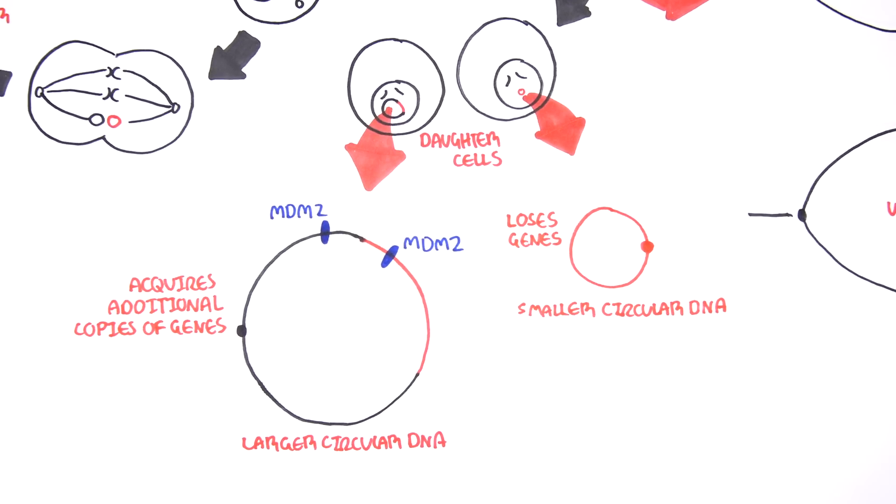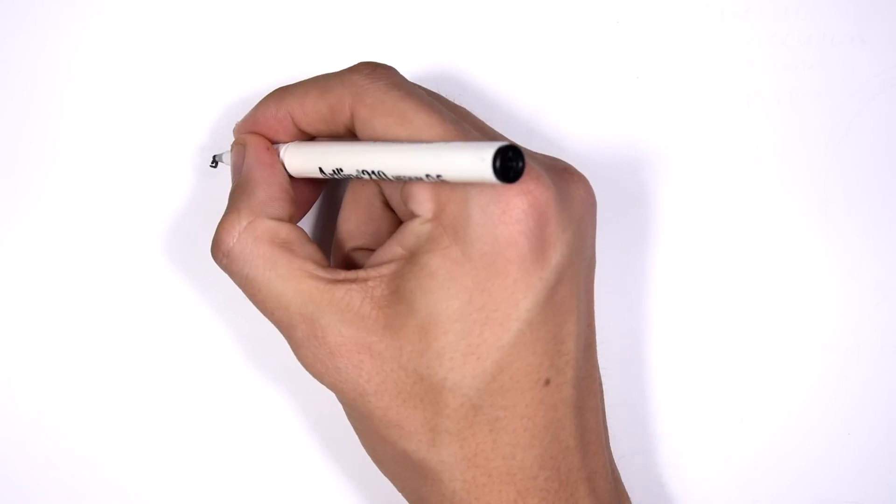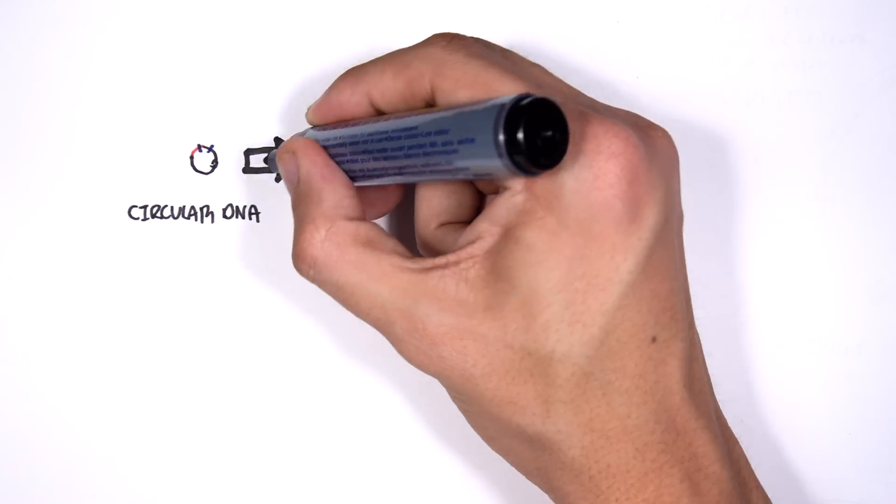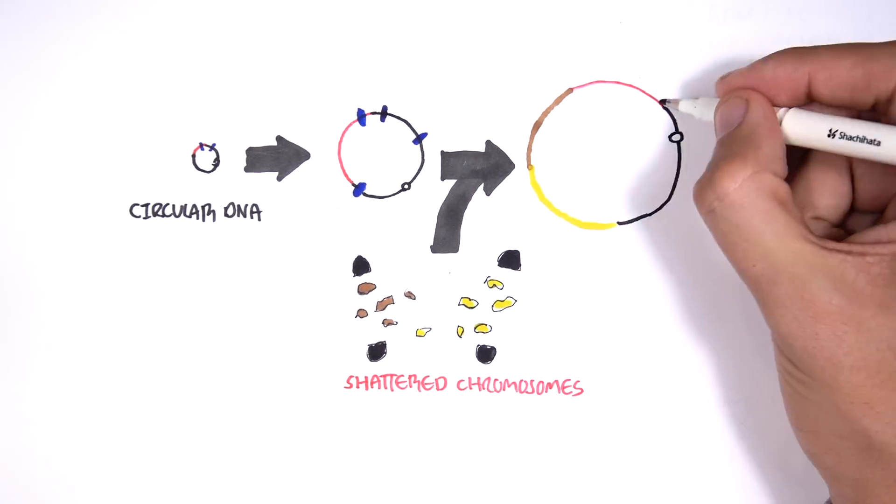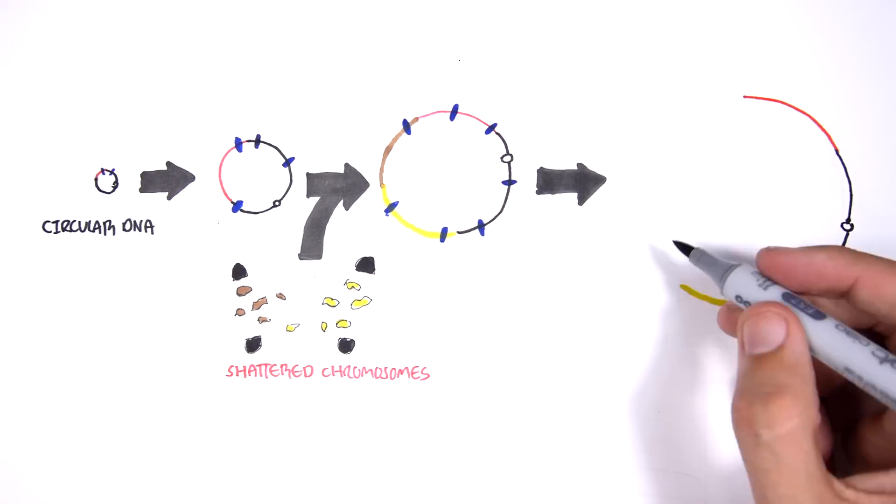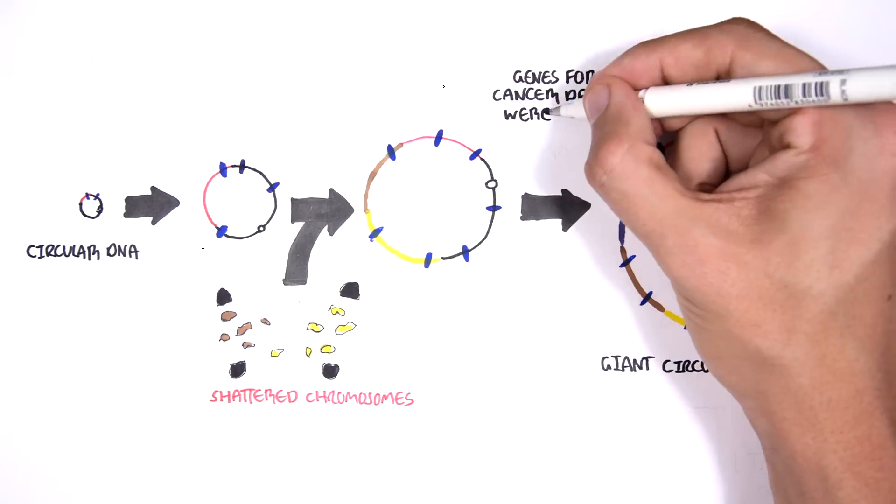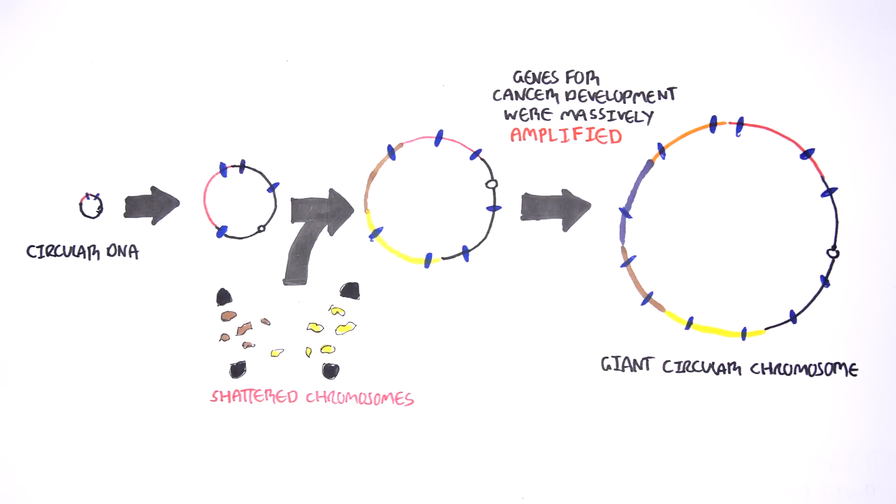When this breakage fusion bridge cycle repeats hundreds or thousands of times, circular DNAs can grow to become giant chromosomes. A huge amount of DNA is gathered along the way, including fragments from a variety of chromosomes across the genome. And far from being random, this study showed that the amplification of certain genes was selective. Genes known to be important for cancer development were massively amplified, going from a single copy in the original chromosome to between 60 and 100 copies in the final neochromosome.